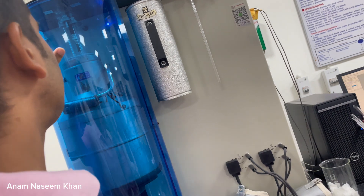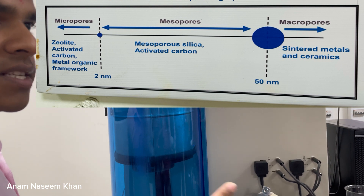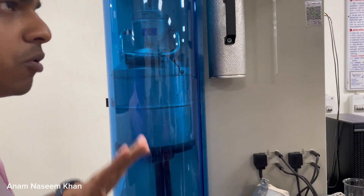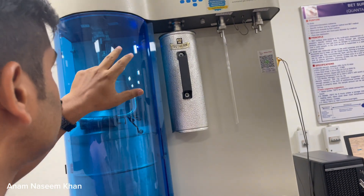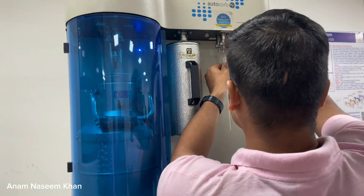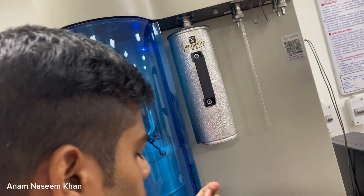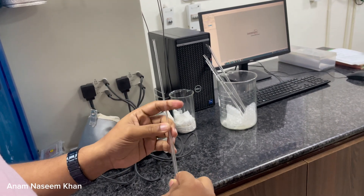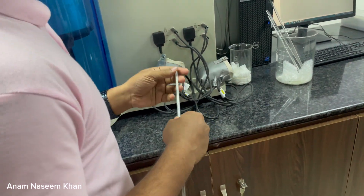There are three stations. In station one, we can calculate micropores, mesopores, and macropores — micropores have a pore radius less than 2 nanometers, mesopores are 2 to 50 nanometers, and macropores are greater than 50 nanometers. In stations two and three, only mesopores can be calculated; micropores and macropores are calculated only in station one. Here is our sample attached to the manifold. You can use a filler rod to speed up the vacuum process, though it is optional.